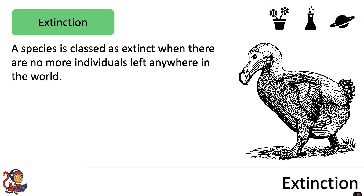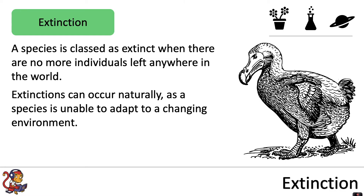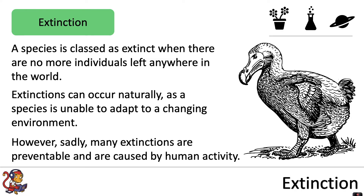A species is classed as extinct when there are no more individuals left anywhere in the world. Extinctions can occur naturally as a species is unable to adapt to a changing environment. However, sadly many extinctions are preventable and are caused by human activity. So here are some causes of extinctions.